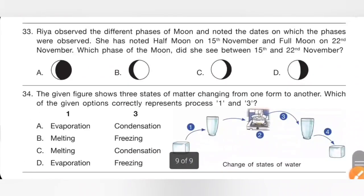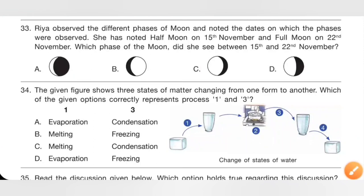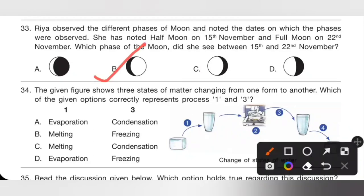Question 33: Rhea observed different phases of the moon and noted half moon on 15th November and full moon on 22nd November. Which phase of moon did she see between 15th and 22nd November? Gibbous moon occurs between half moon and full moon. Option B is the correct answer.